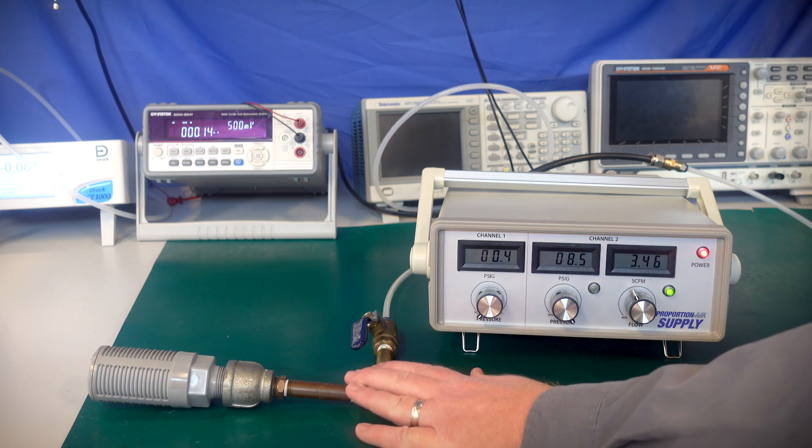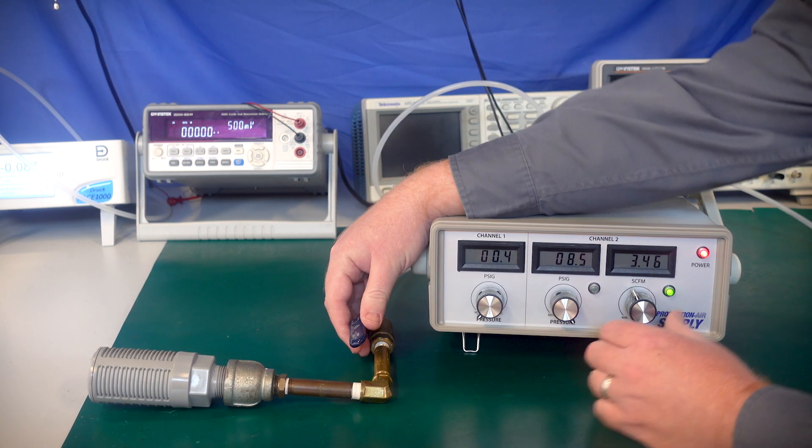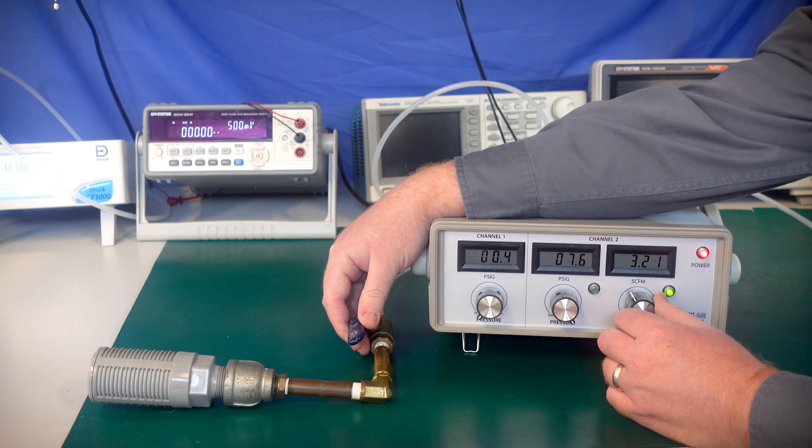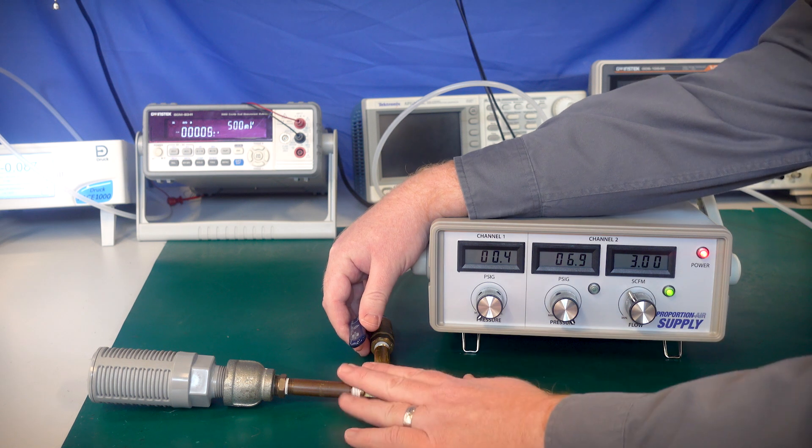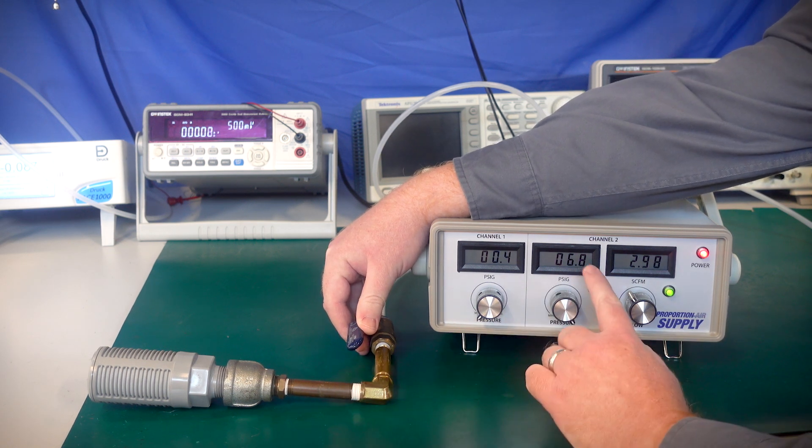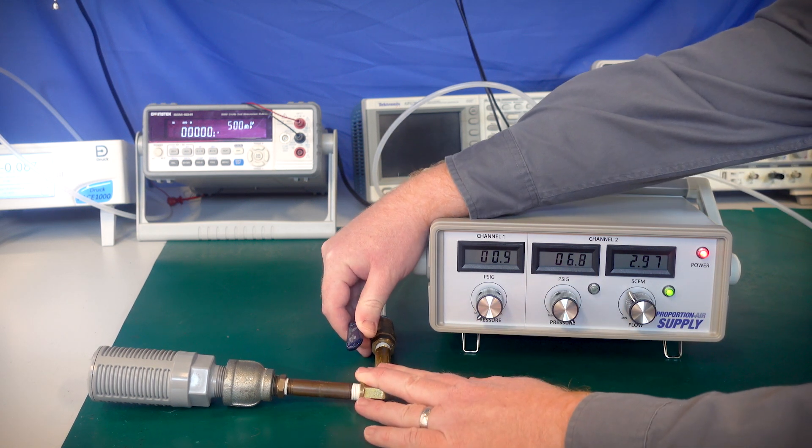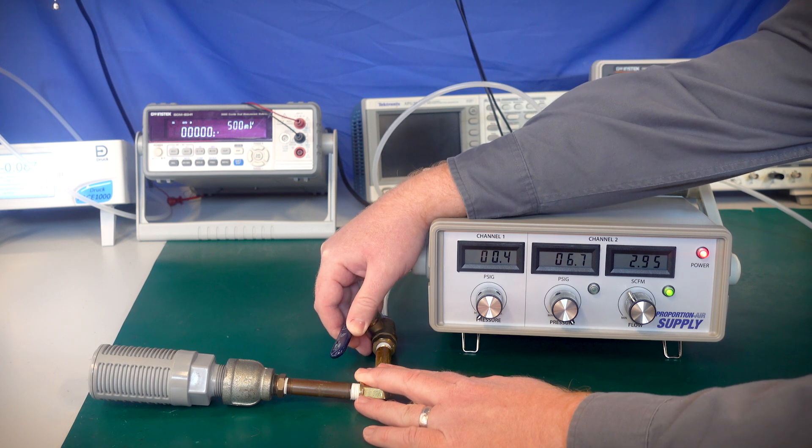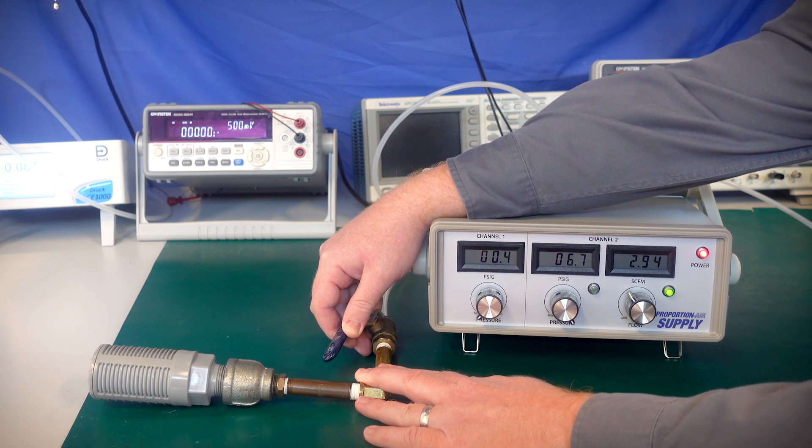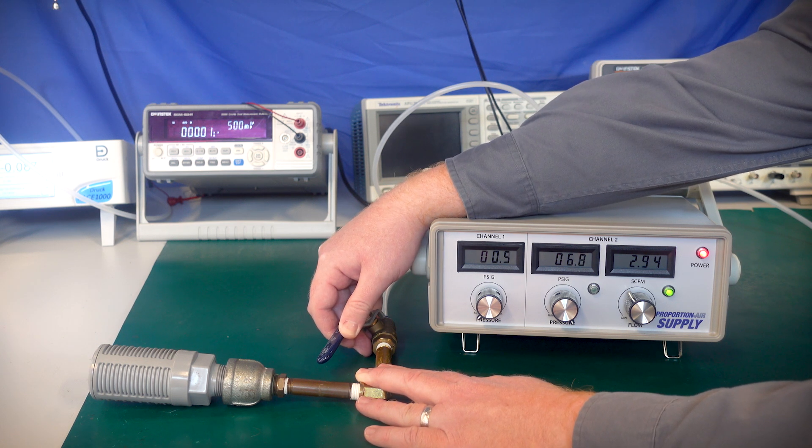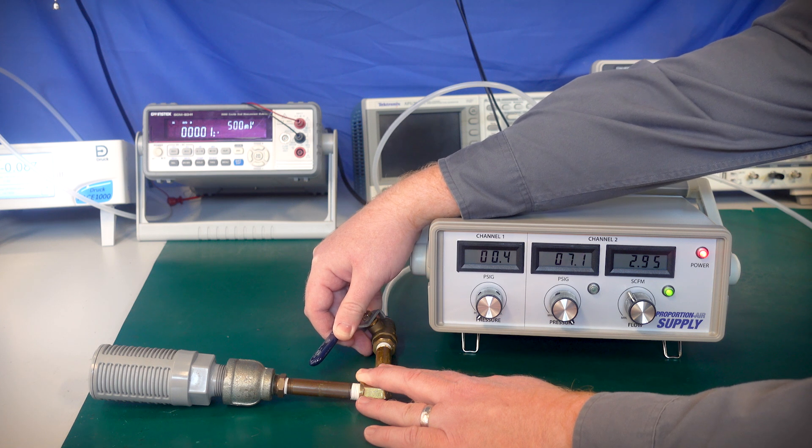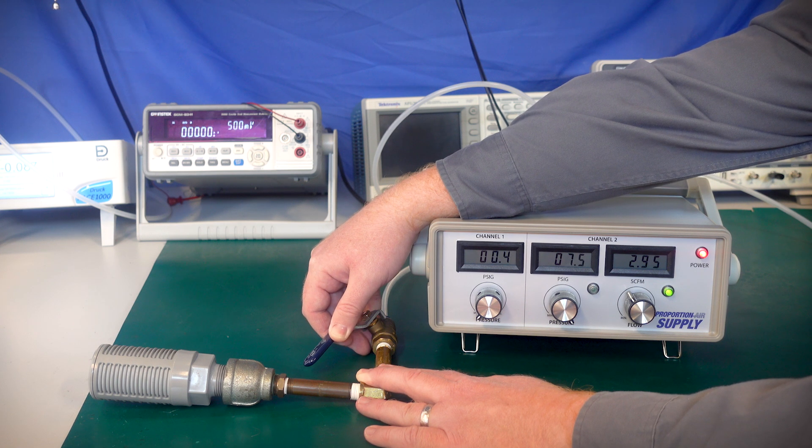Through this ball valve, if we set the flow to about 3 SCFM, we see it takes almost 7 psi. As we start to close this ball valve or put some kind of restriction, the pressure will begin to increase to maintain the flow rate.